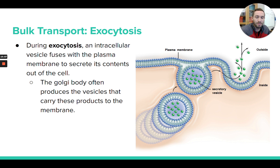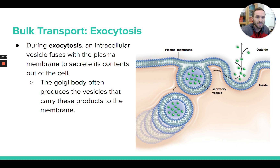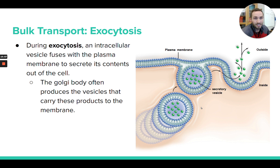Exocytosis is when there's a vesicle inside the cell carrying some stuff that needs to be secreted or released from the cell. That vesicle comes and fuses with the cell membrane, and by fusing with the cell membrane it's able to release and secrete that material. For example, these could be digestive enzymes in your stomach cells — made by the rough ER, modified by the Golgi, packaged into a vesicle, carried to the cell membrane, and released out of the cell. That process is called exocytosis and does require ATP.